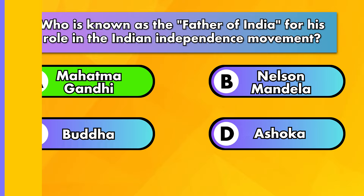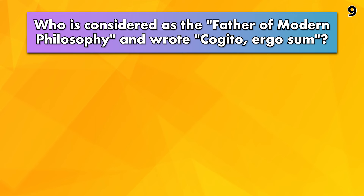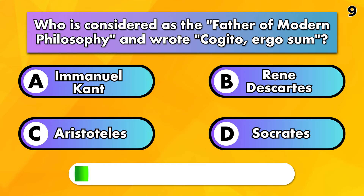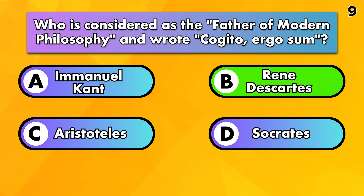Who is considered the father of modern philosophy and wrote Cogito Ergo Sum? Immanuel Kant, René Descartes, Aristoteles or Socrates? The answer is René Descartes.